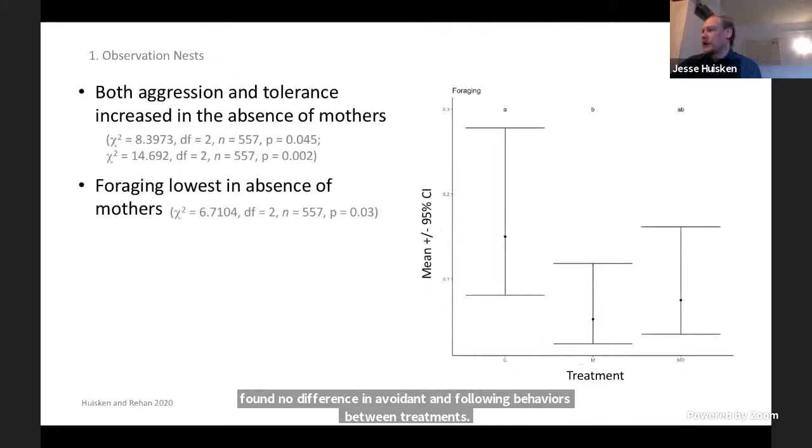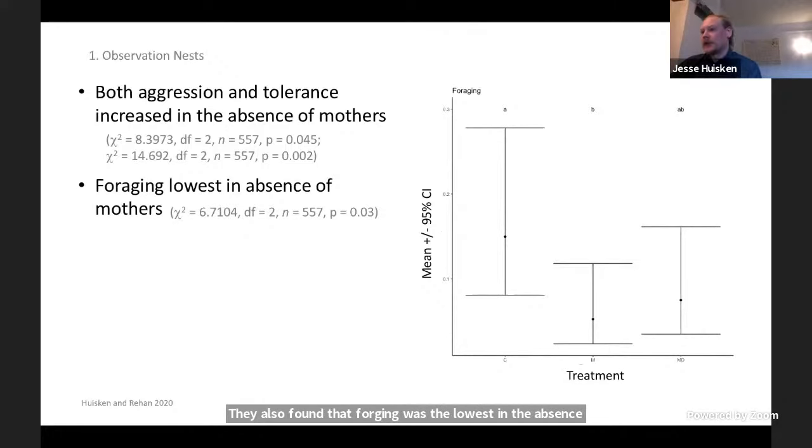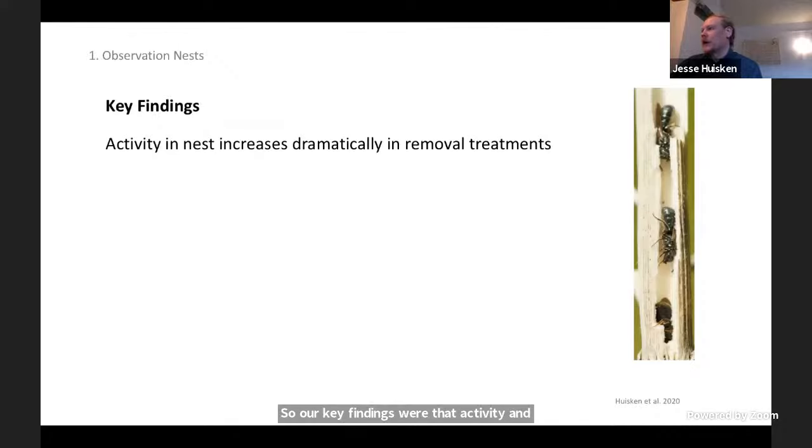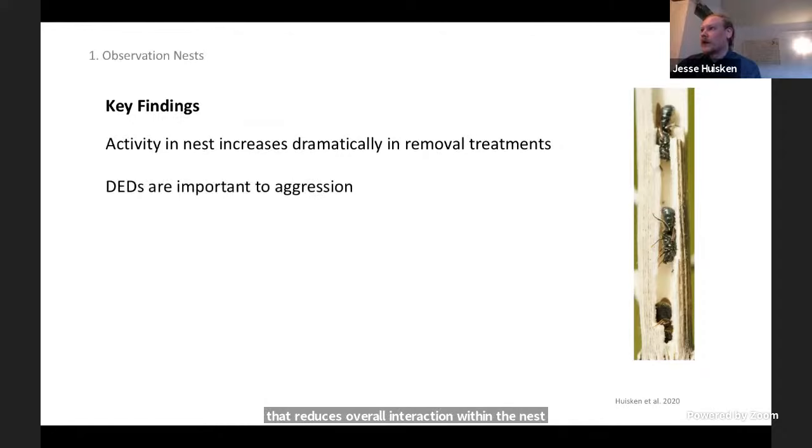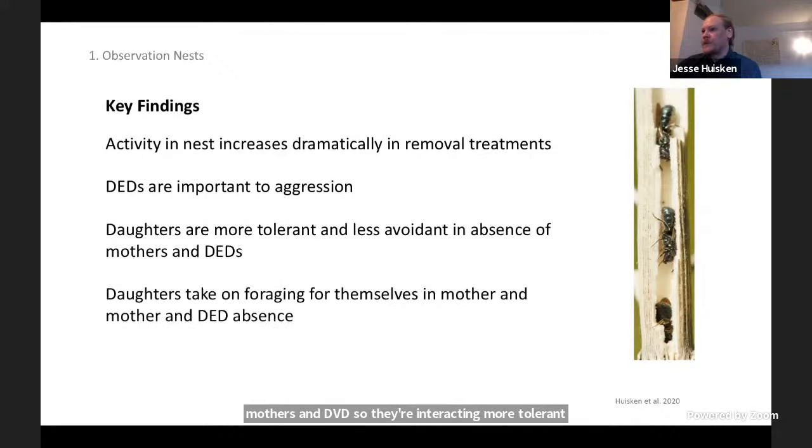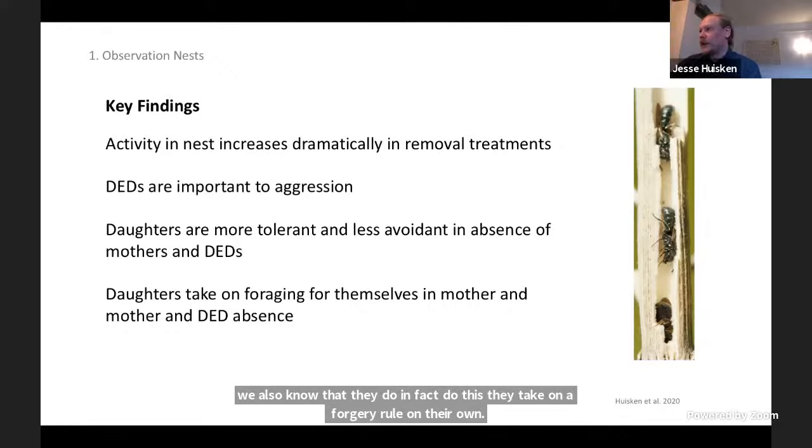We also found that foraging was the lowest in the absence just of mothers. So it appears that when you remove mothers and dwarf eldest daughters, regular daughters do engage in some foraging on their own. Our key findings were that activity in nests increases dramatically under removal treatments. Mothers may be producing some sort of social hierarchy that reduces overall interaction within the nest. DEDs do moderate aggression somewhat within nests. Daughters are more tolerant in the absence of mothers and DEDs—they're interacting more in a tolerant fashion, possibly to negotiate foraging roles. And they do take on a foraging role on their own when they're not being fed by a mother or dwarf eldest daughter.